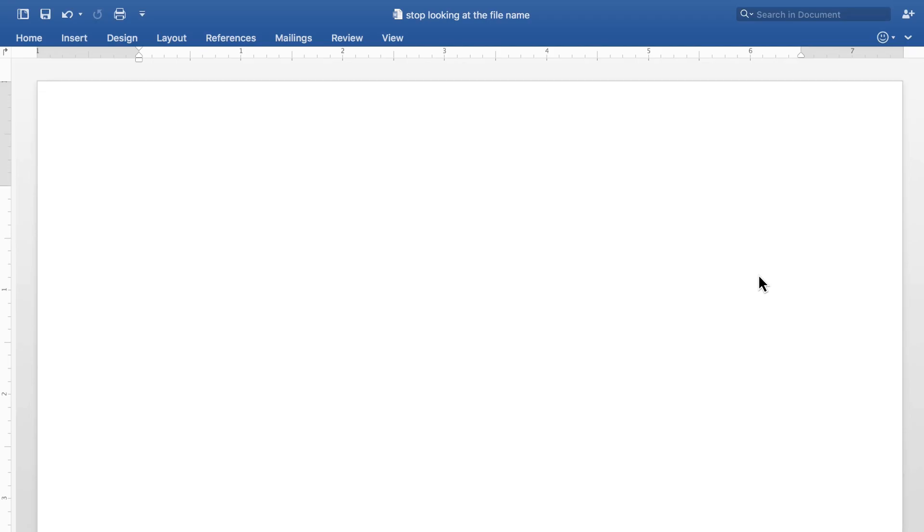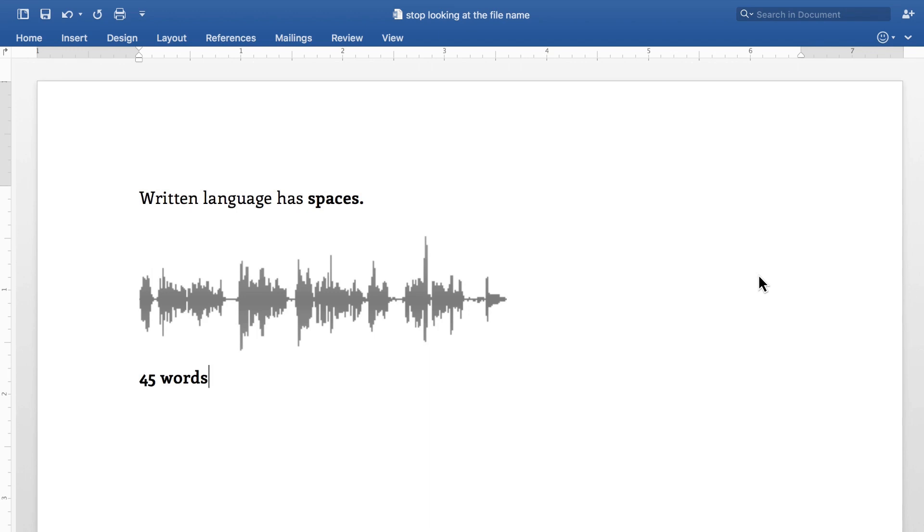But that's not exactly an easy task. While written language has spaces to clearly indicate when one word starts and another ends, that's not the case with speech. For instance, this paragraph has 45 words, but only seven or so distinct pauses.